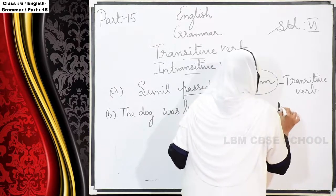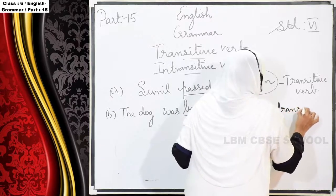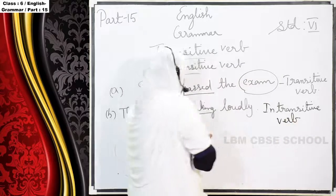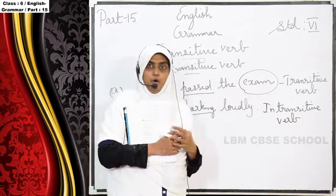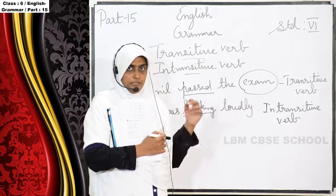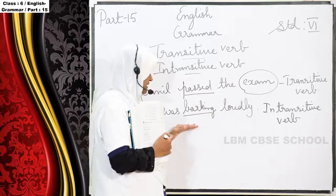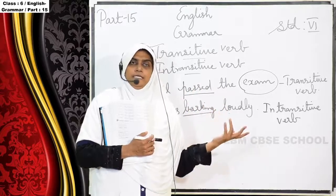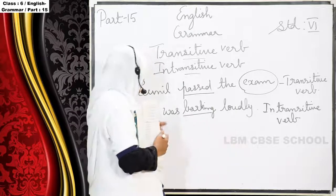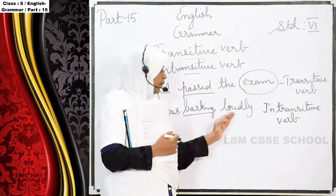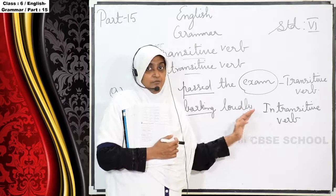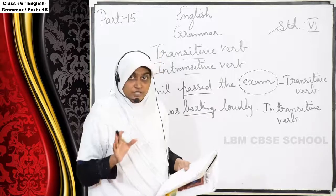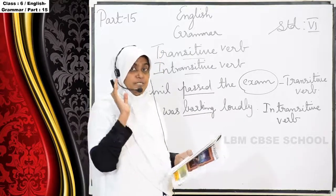Intransitive verb. The verb should take the object — that we call a transitive verb. But here, 'the dog was barking loudly' — it doesn't take the object. So 'the dog was barking loudly' is an intransitive verb. It doesn't take the object. If there is no object, we say it is an intransitive verb.